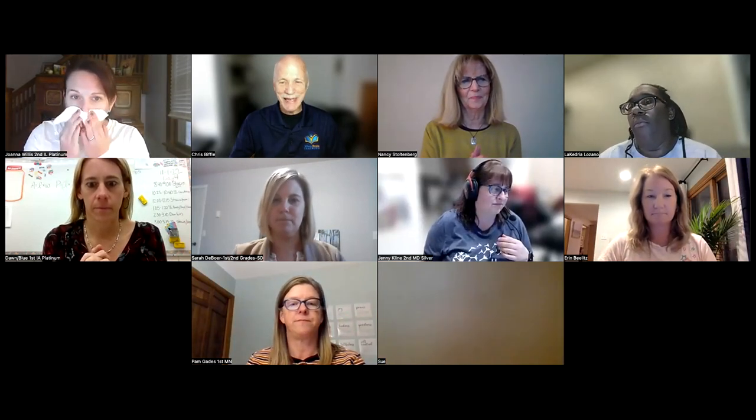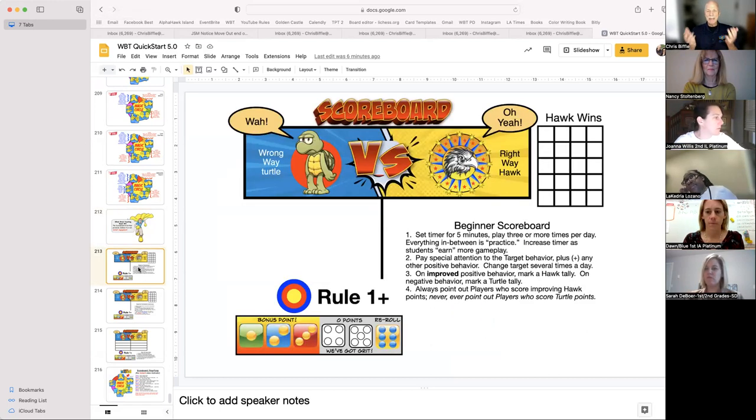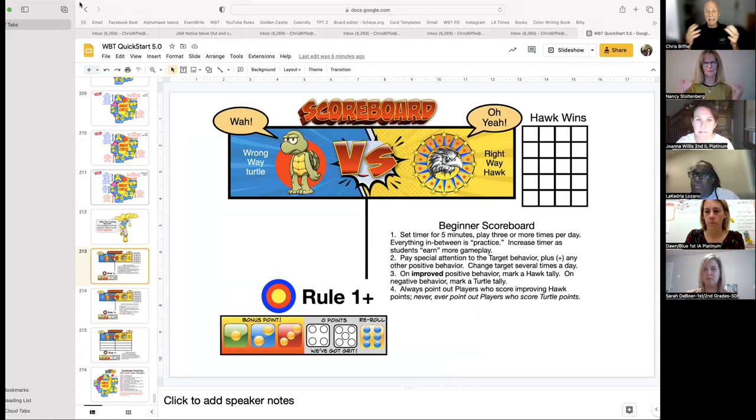This set of slides is available as a free download. We will post the link in the YouTube video. Here we are, reset number three. Here's the beginner scoreboard. The beginner scoreboard, you set the timer for five minutes, and you play three or more times a day. The reason you set it for five minutes is so you're sure to do it, and kids will remind you. Everything else is practice in between.